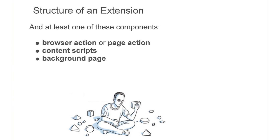Background pages are long-running scripts that help you manage state and coordinate tasks across extension components. As an extension gets more complex, it tends to need a background page. In addition to these components that are specific to Google Chrome extensions, you can bundle any other web files with your extension — images, JavaScript libraries, Flash movies, whatever it is your extension needs.